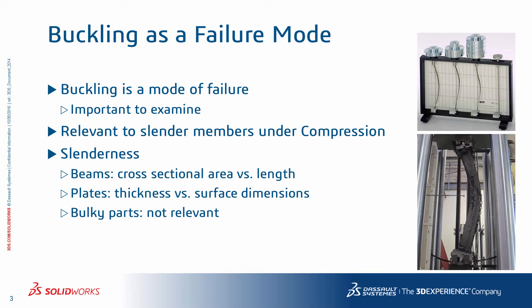Similarly, for plates and sheet metals, thickness compared to the other dimensions determines slenderness. Bulky parts are not slender and so buckling is not an issue. And remember that by saying bulky, we do not mean a big part in terms of its actual volume, but rather a part whose dimensions are proportionate — or better said, the relative dimensions are not too disproportionate as with a long beam or a thin plate.